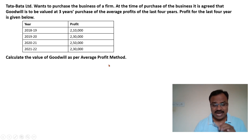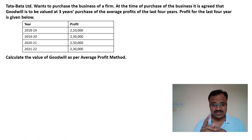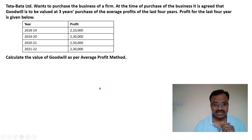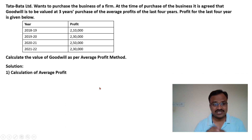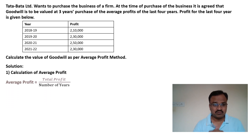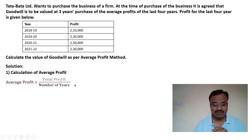As per the average profit method there are only two steps. In the first step we need to calculate average profit, and in the second step we calculate the amount of goodwill. For average profit we use the formula: average profit = total profit divided by number of years.